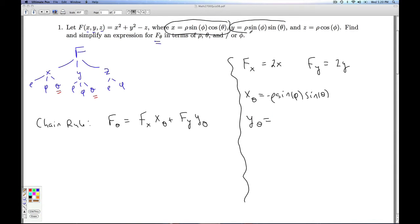And then I look at the y_theta. Here's the y, rho and phi are constants. So I get a rho sine phi. And then I take the derivative of sine theta, and get cosine theta.